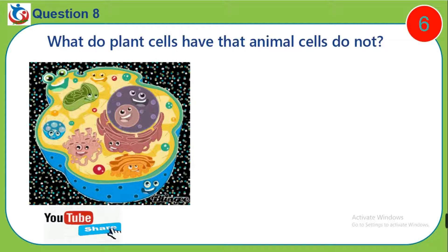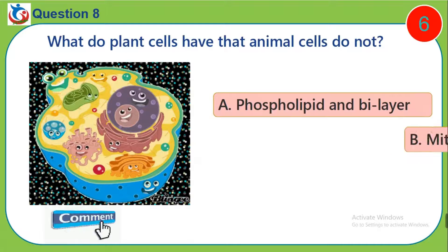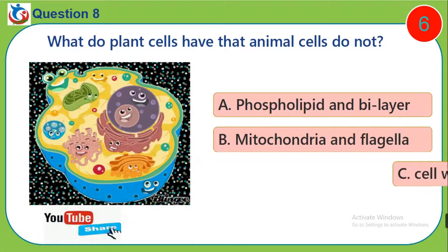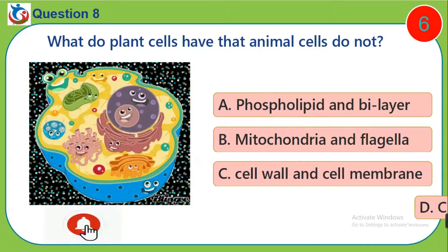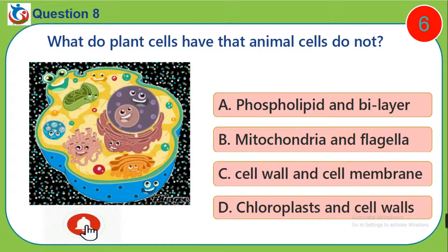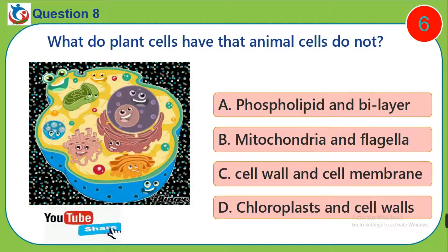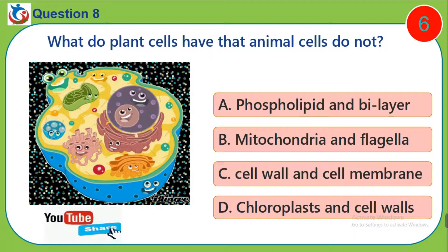Question 8. What do plants have that animal cells do not? A. Phospholipid bilayer. B. Mitochondria and flagella. C. Cell wall and cell membrane. D. Chloroplast and cell walls.